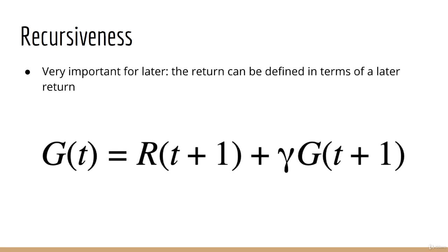One important feature of the return, which we will make use of throughout the rest of this section, is that it can be defined recursively. In other words, in terms of itself. Specifically, the return at time t is equal to the reward at time t plus 1 plus gamma times the return at time t plus 1.